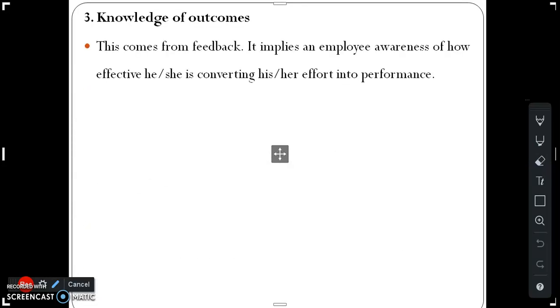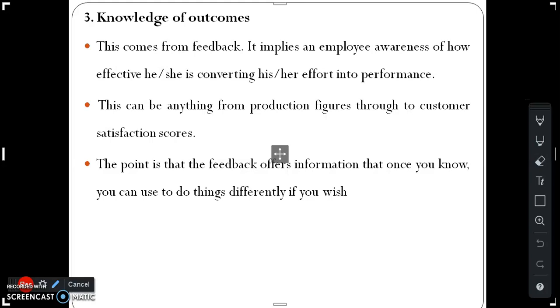Knowledge of outcomes: this comes from feedback. It implies an employee's awareness of how effective he or she is converting his or her effort into performance. This can be anything from production figures to customer feedback. The point is that the feedback offers information that once you know, you can use to do things differently if you wish. Feedback can come from other people or the job itself.